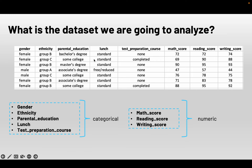By taking a look at this dataset, we notice that it contains some categorical variables and numeric variables. The categorical variables include gender, ethnicity, parental education, lunch, and test preparation course, because all of these variables are represented as labels. We also have numeric variables, which in this example represent academic performance — that includes math score, reading score, and writing score.